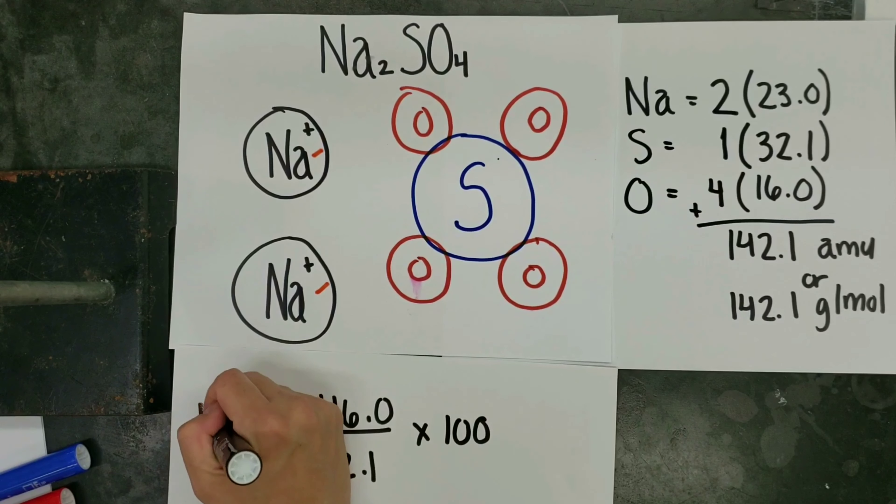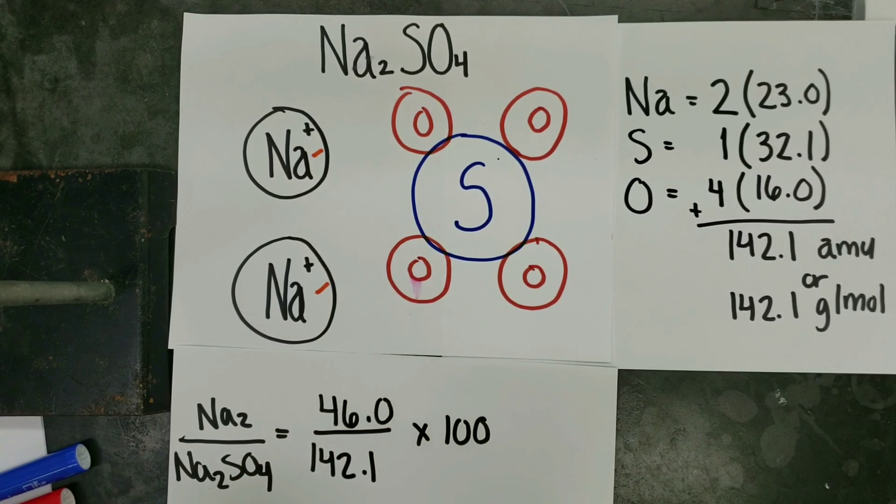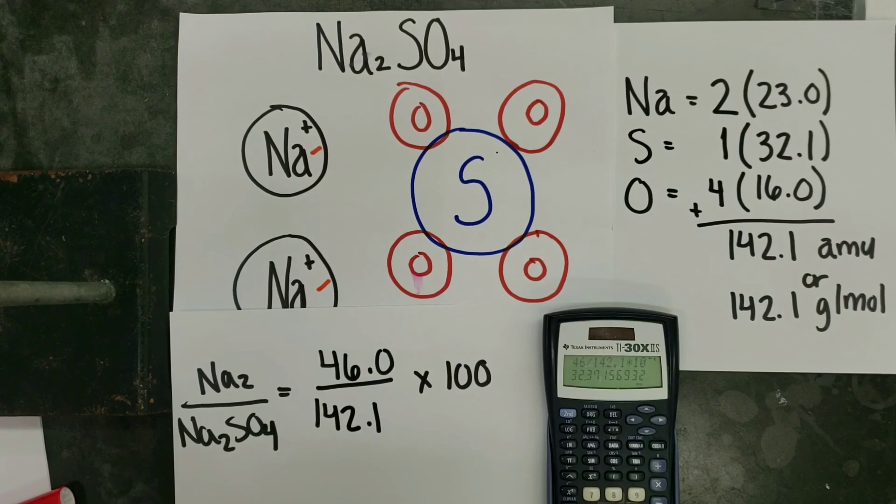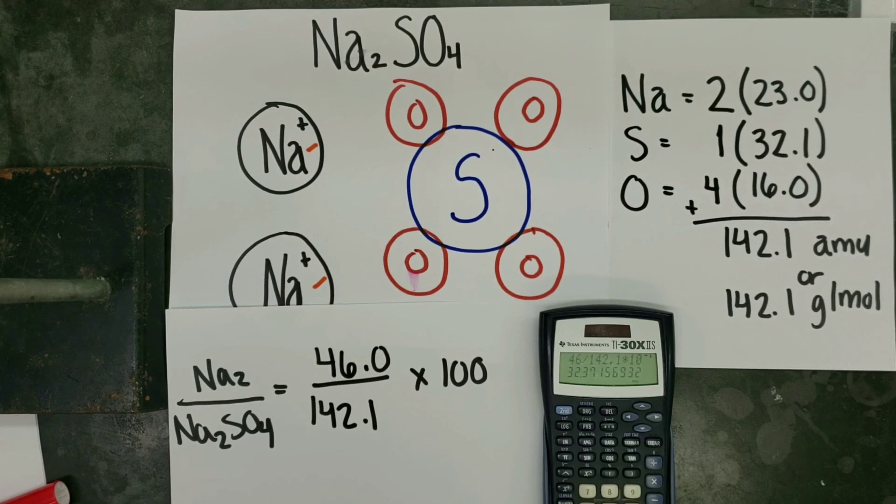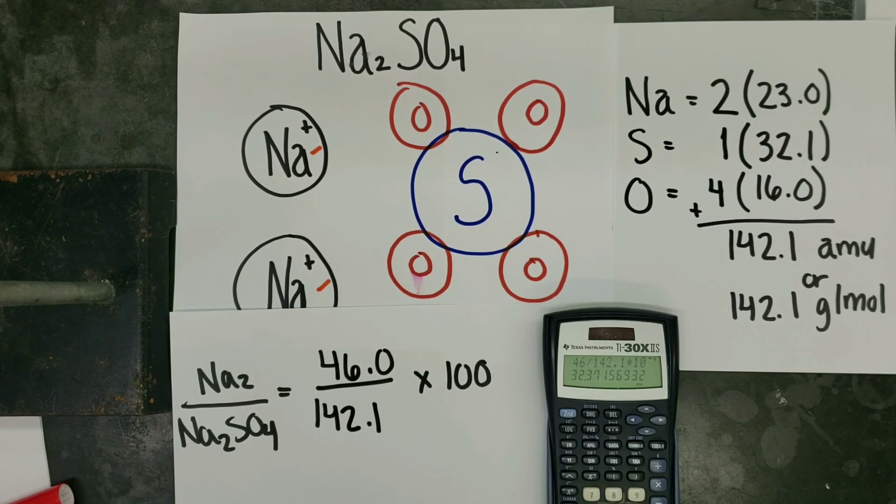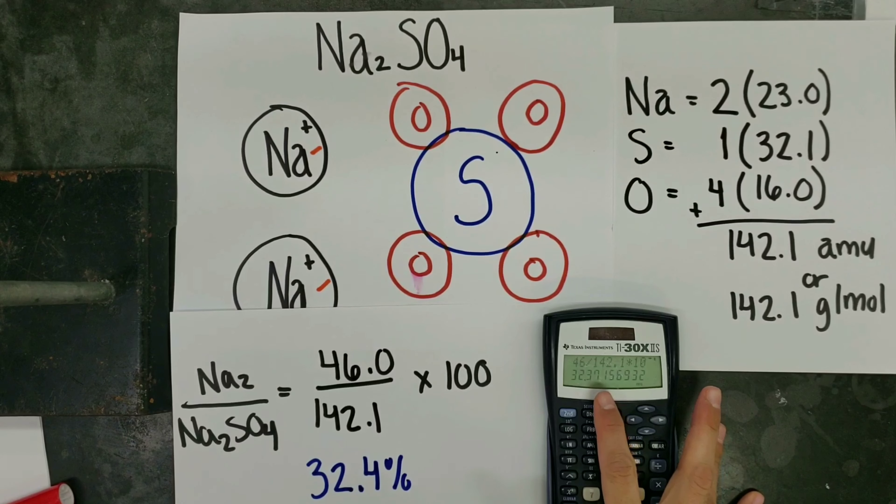Because again, this is the mass of two sodiums over the entire ion. Placing this in our scientific, not graphing calculator, we get that the percent by mass of sodium in sodium sulfate is 32.4%. Notice how, since we are rounding to the tens place, we examine the hundreds place to determine how to round. The seven tells us to round up.